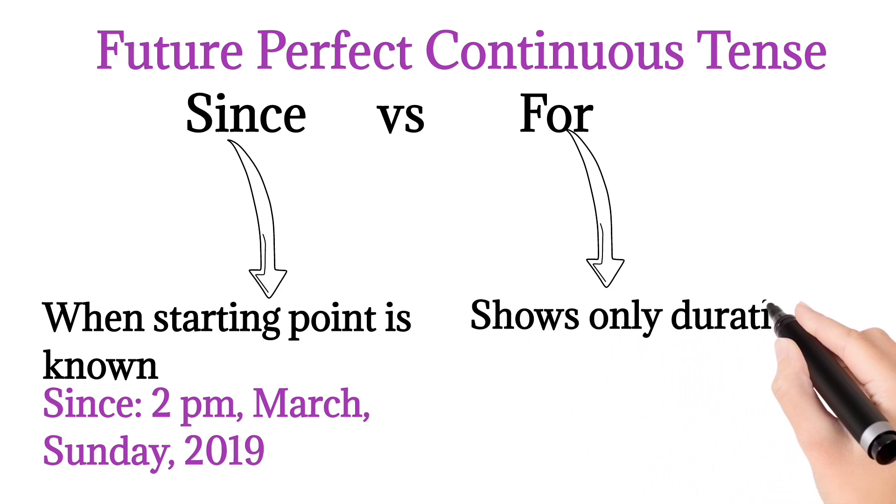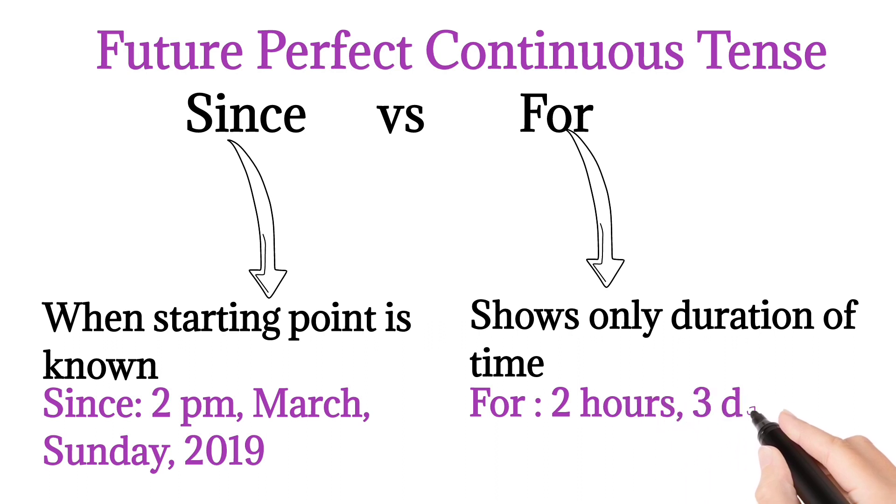For will be used to show only duration of time: for 2 hours, for 3 days, for 1 week, 10 days, etc.